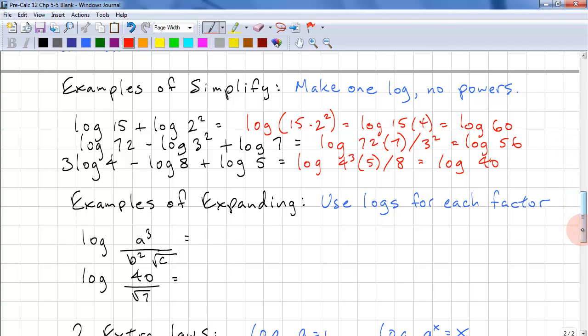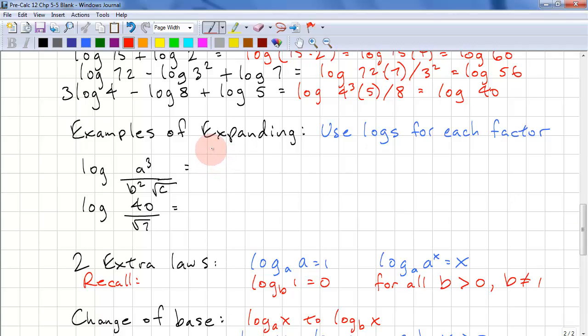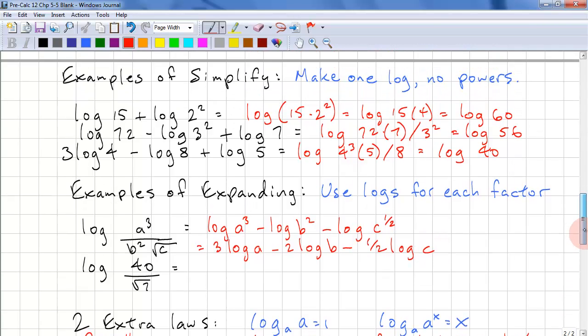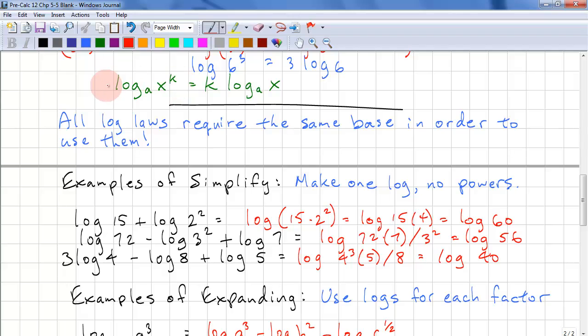Here's another example. We want to expand, so we want single logs for each factor. We need log a, log b, and log c. This equals log a cubed minus log b squared. And we need to subtract log c because c is in the denominator. And square root, we have a power of 1 half. This simplifies into 3 log a minus 2 log b minus 1 half log c. I'm just using the rule here, where we can bring the exponent out front.